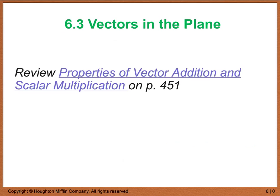There's 8 of them, but just to kind of run through a few of them, you have properties such as vector u plus vector v is the same thing as vector v plus u. If you take vector u and you add it to the zero vector, you get vector u.